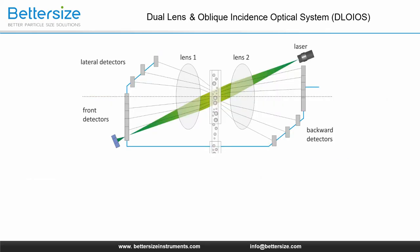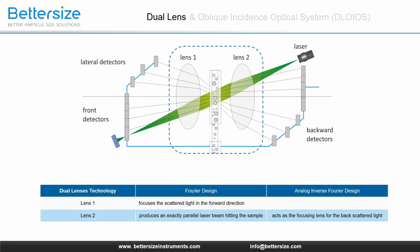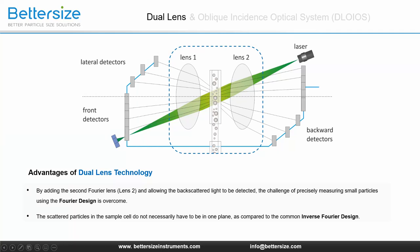After introducing the respective shortcomings of both setups, let's take a look at how DLO iOS builds a new optical platform to avoid those shortcomings. Lens 1 focuses the scattered light in the forward direction into the detector plane, according to the classical Fourier design. Lens 2 generates a parallel laser beam which hits the particles, and on the other hand, it acts as a collective lighting lens and focuses the scattered light backwards towards backscattering detectors. Therefore, the DLO iOS design is based on the classical Fourier design, since both lenses act as convergent lenses focusing the scattered light onto the detectors.